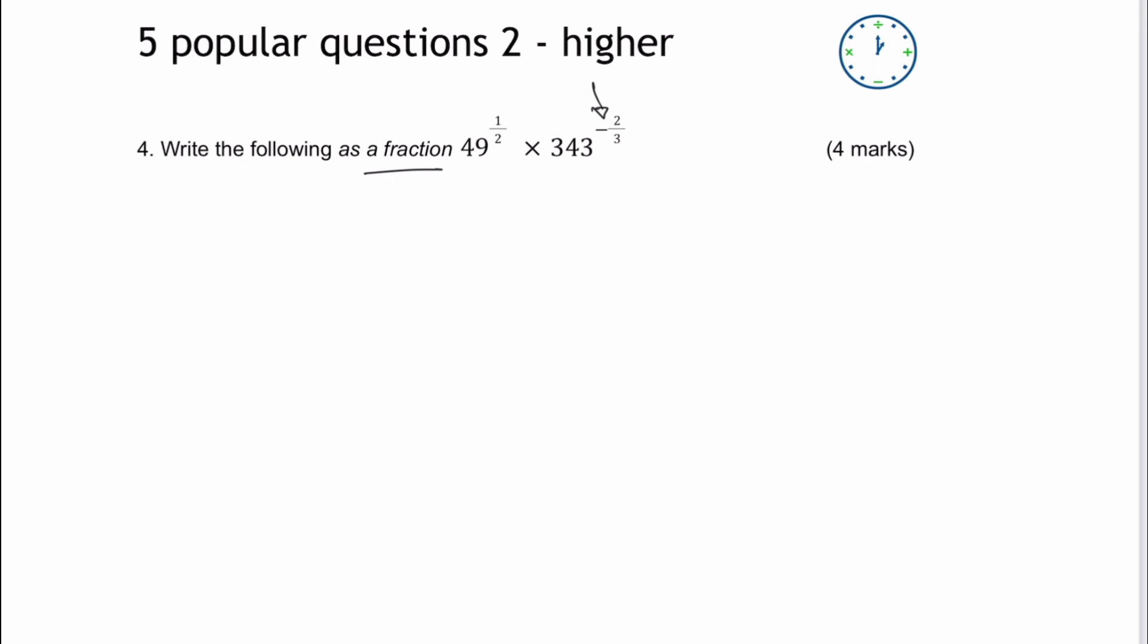So I've got 49 to the power of a half is exactly the same as saying the square root of 49, and that's going to be multiplied by the reciprocal of then 343, and that's to the power of two-thirds.